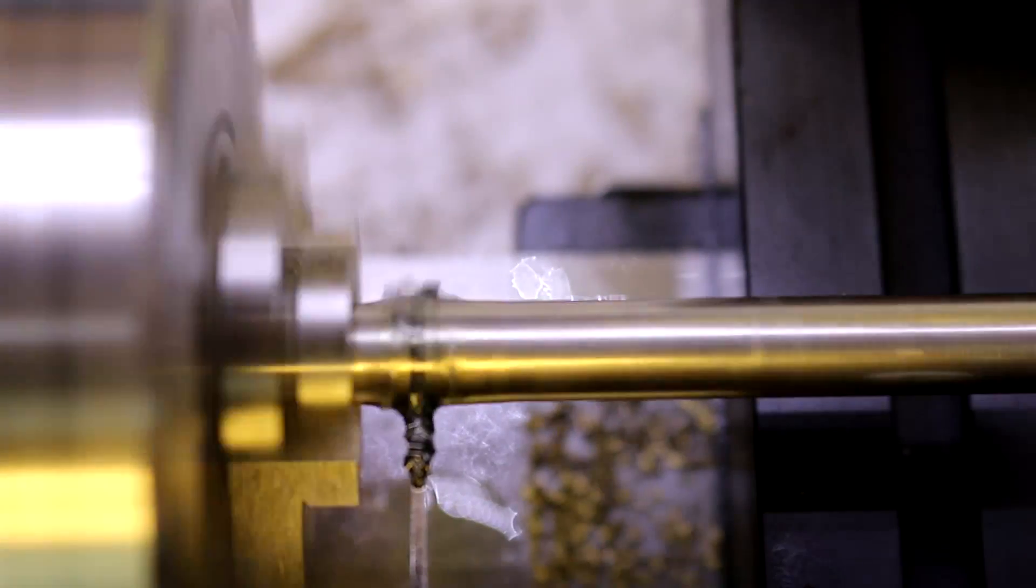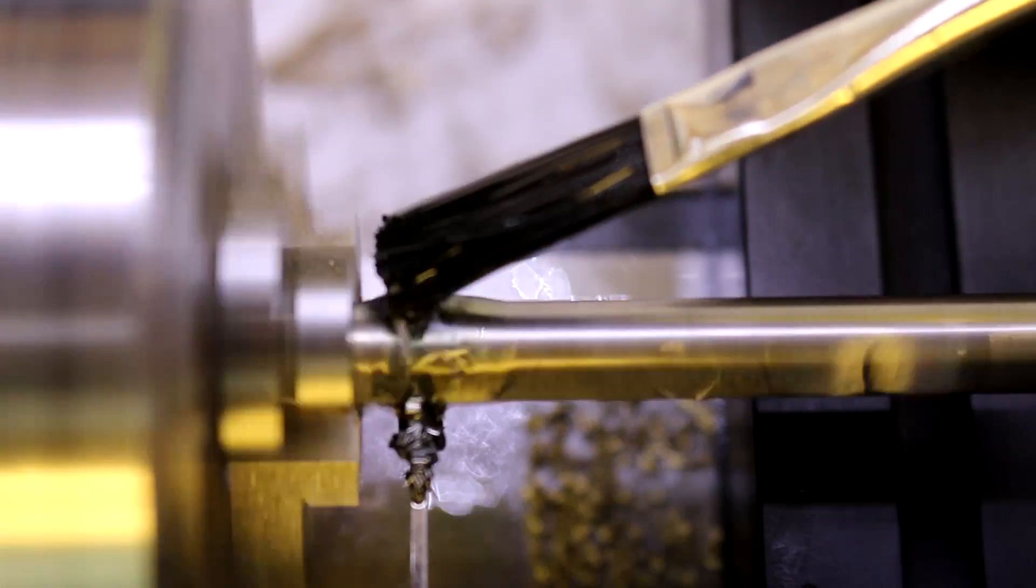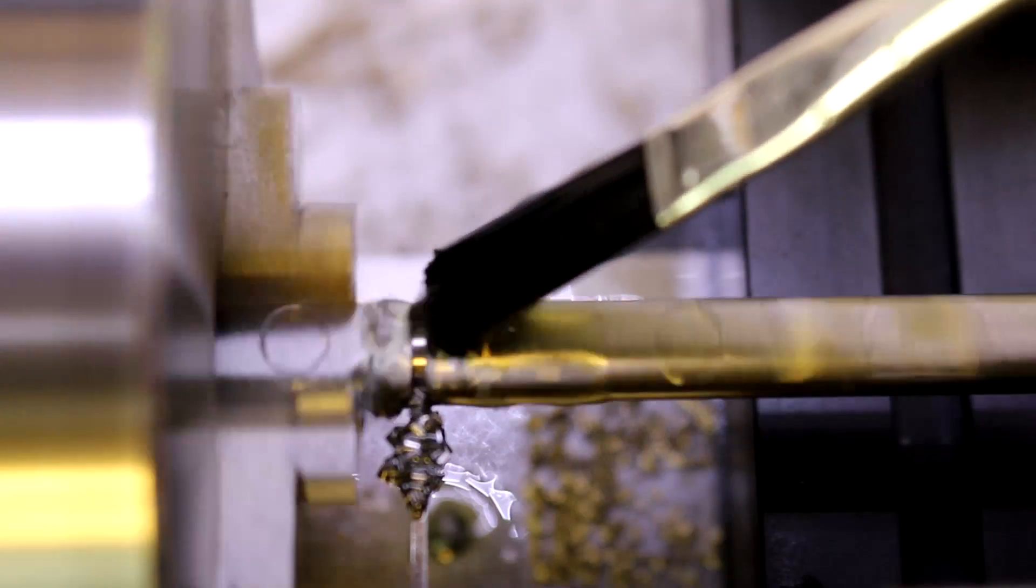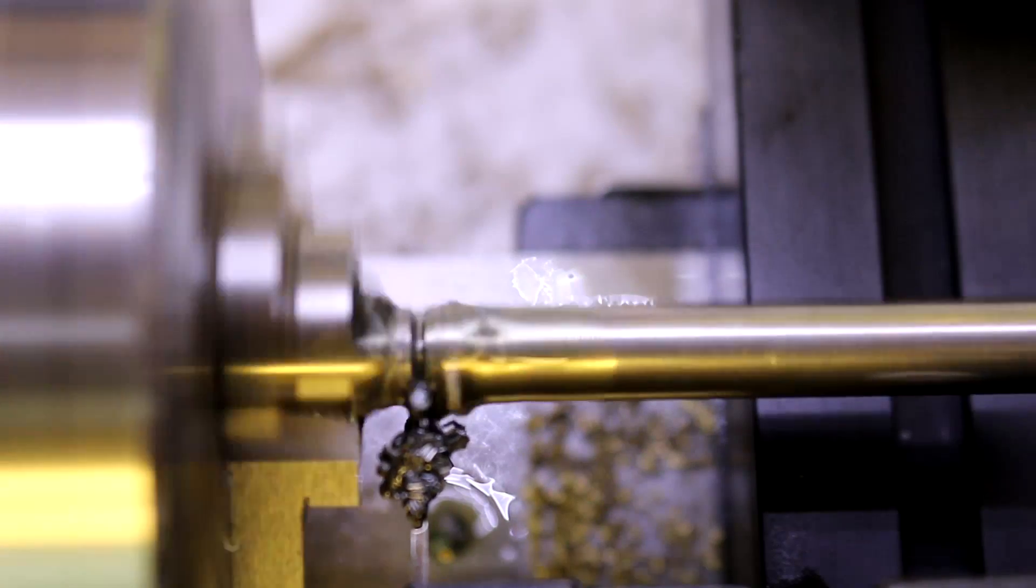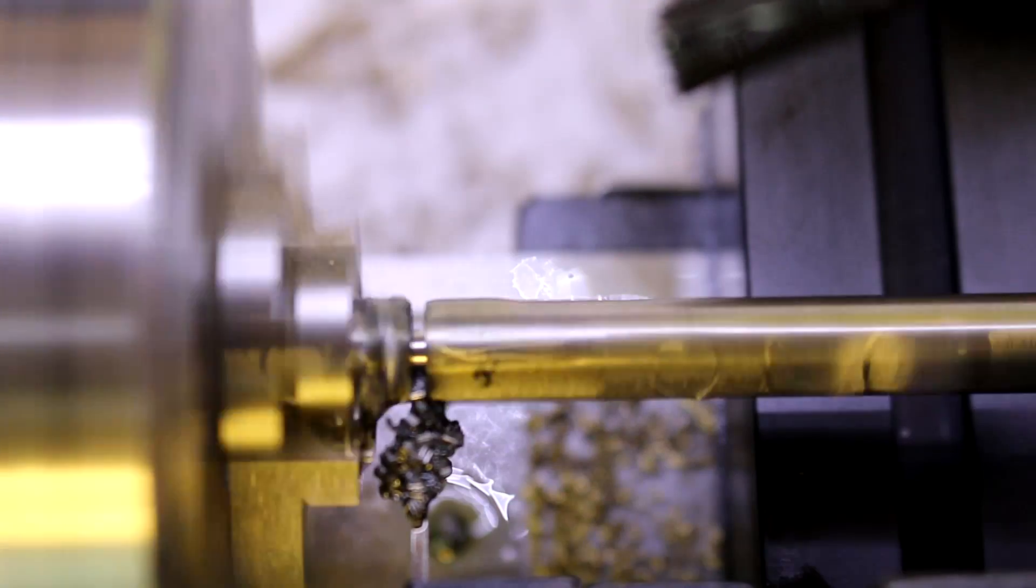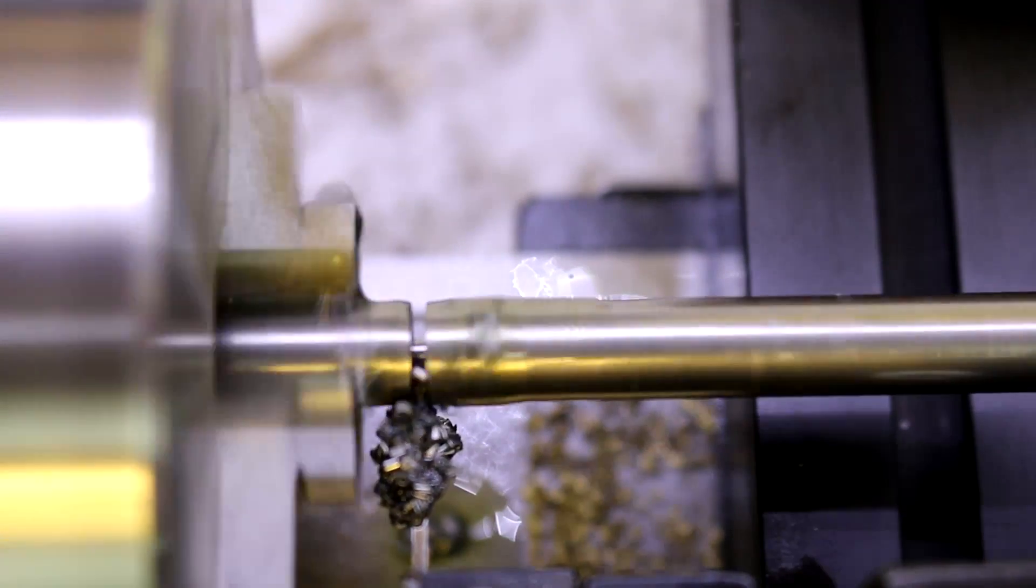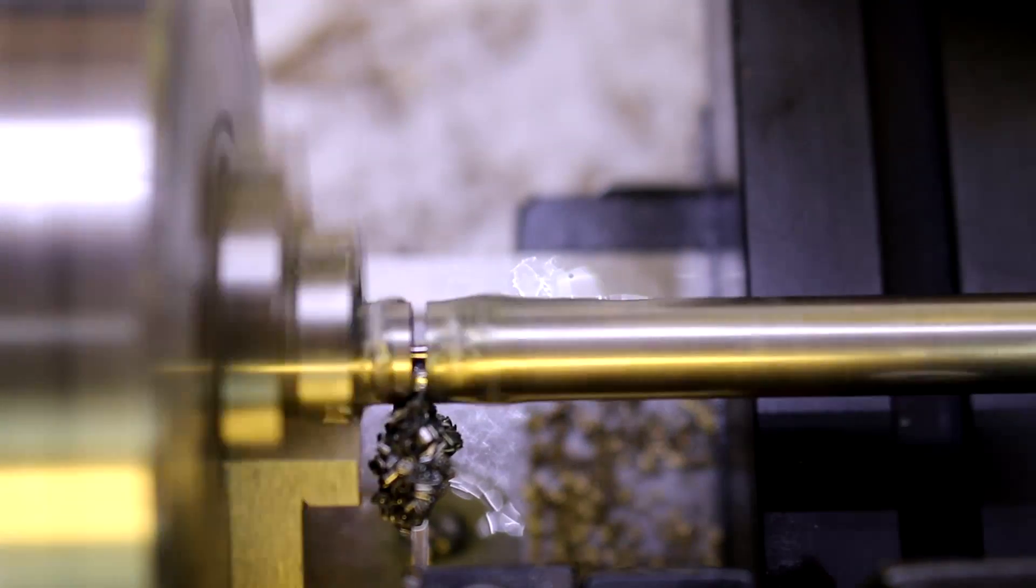So now I'm over at the lathe and starting our cutoff operation. This piece is roughly 2 inches long. We can cut some 2 inches, some 3 inches, some 1 inch. Remember, for cutoff operations, you want to use a very low speed and lots of lubrication.